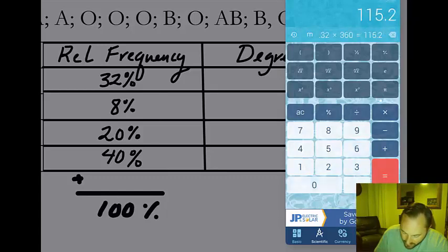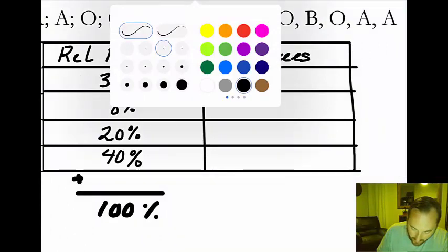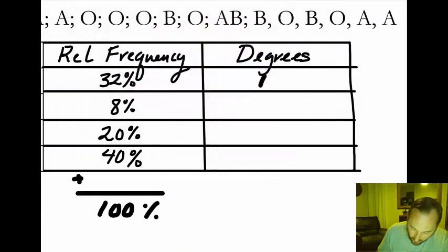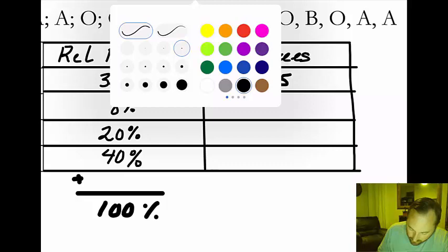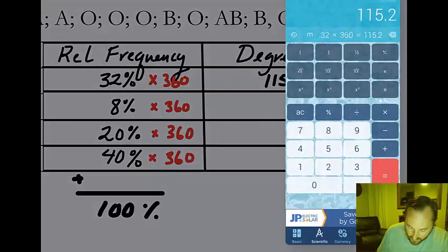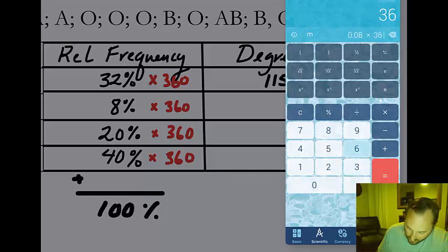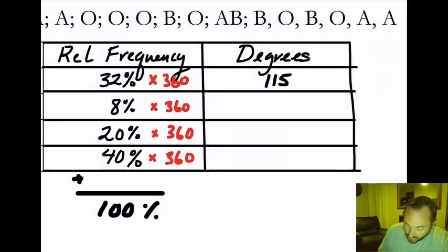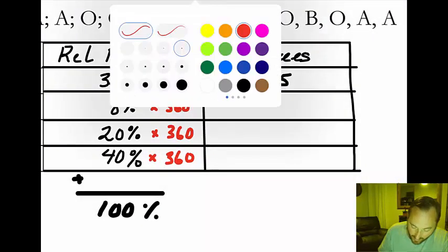The first one: 0.32 times 360 gives us 115 degrees — rounding to the nearest whole number. Simply making that adjustment into decimal times 360. Next one: 8% as 0.08 times 360 gives us about 29 degrees.